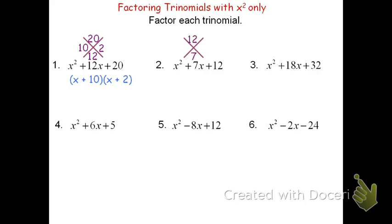We'll do the diamond problem for problem 2, and we see we're looking for a product of 12 and a sum of 7. We go through different ways to make 12 by multiplying: 1 times 12, 2 times 6, 4 times 3 — until we find the one that adds to be 7. In this case, it's 4 times 3. 4 times 3 is 12, and 4 plus 3 is 7. Because it's in the form of a 1x squared, we go straight to the factored form: quantity x plus 4 times quantity x plus 3.